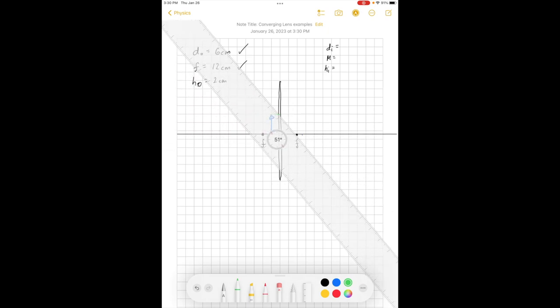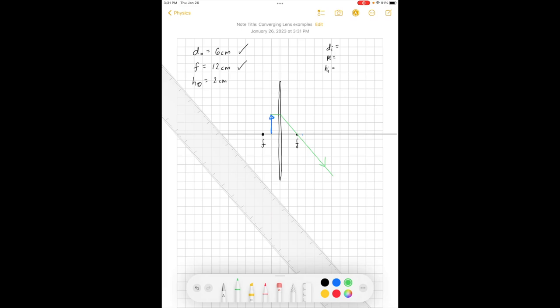the rays that come out, if they came in parallel to the axis, they will come out and converge towards the focus. So that would be the path of one of the rays.